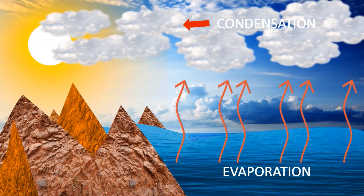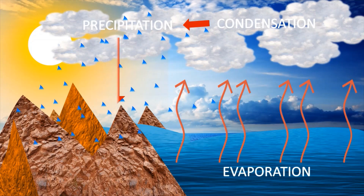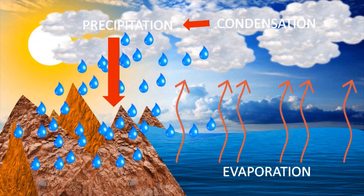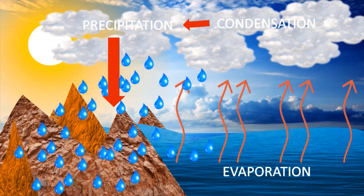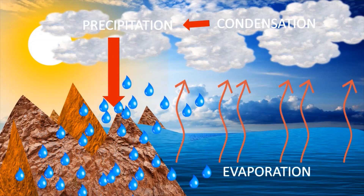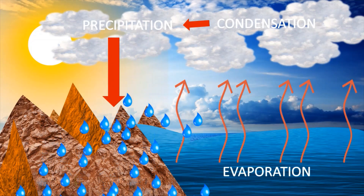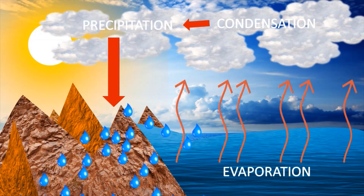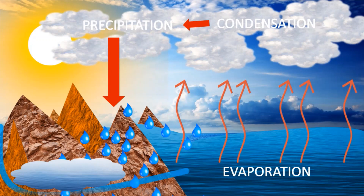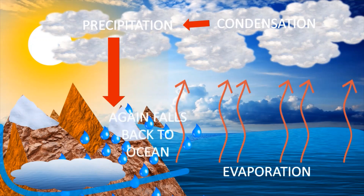The cooled water vapor forms clouds. When the clouds become heavy, they are unable to hold the water and it bursts, resulting in precipitation. Precipitation is a process in which any form of water comes down to the earth, such as rain falling.